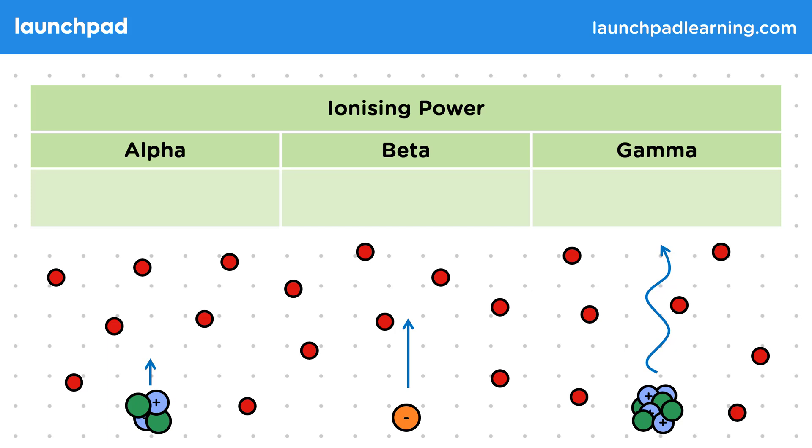Ionising power is the ability to add or remove electrons from atoms. Alpha particles are the most ionising as they have a strong positive charge, which pulls electrons out of orbit.